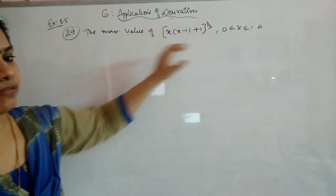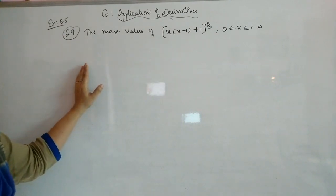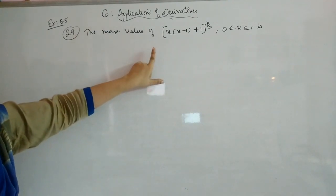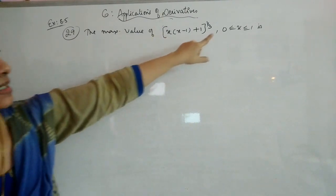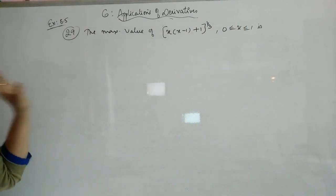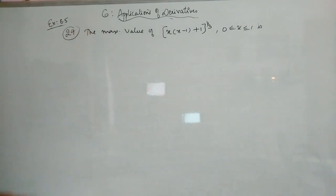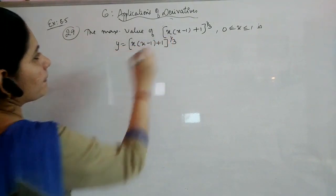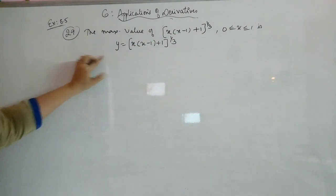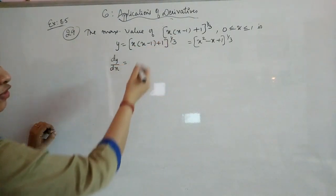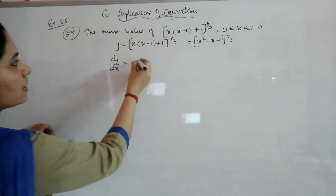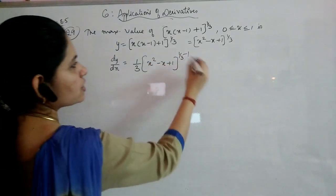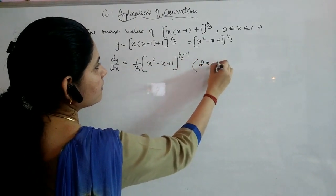Remember, when a boundary is given in the question, you must use the absolute maximum/absolute minimum method. That means you check f at all critical points obtained by equating the derivative to 0, and also at the boundary points 0 and 1. The value giving the maximum is the answer. Here, y = (x² - x + 1)^(1/3).